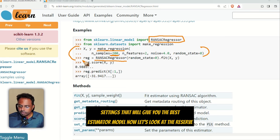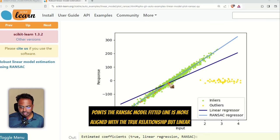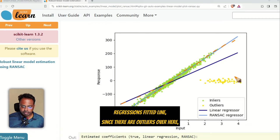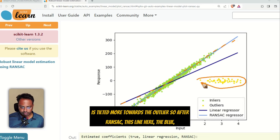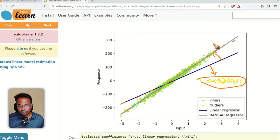That will give you the best estimator model. Now let's look at the results comparison. We have the RANSAC model fitted line. Say this is the distribution of data points. The RANSAC model fitted line is more aligned with the true relationship. But linear regression's fitted line, since there are outliers over here, is tilted more towards the outlier. So after RANSAC, this line here, the blue, dark blue line, got tilted towards the more true relationship.